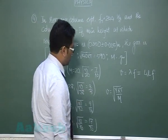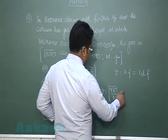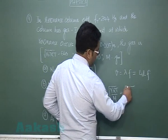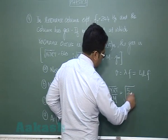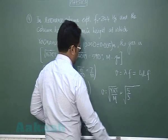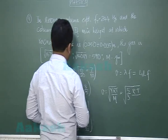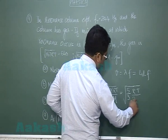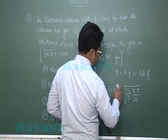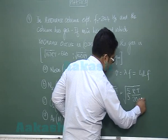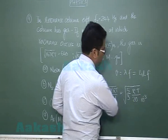Let me show it to you for the case of neon. Gamma obviously would be 5 by 3 because neon being monoatomic, R temperature T, and mass as we have said is to be kept, that mass 20 is in gram, so 20 into 10 raised to the power minus 3.